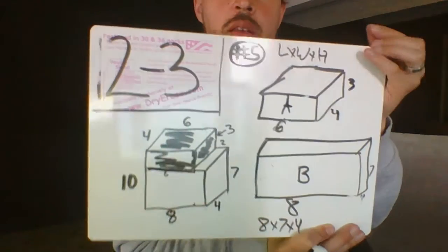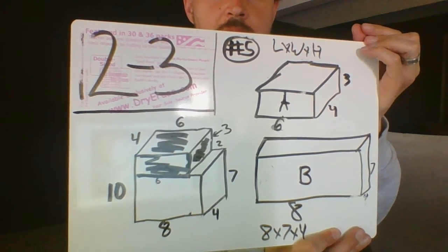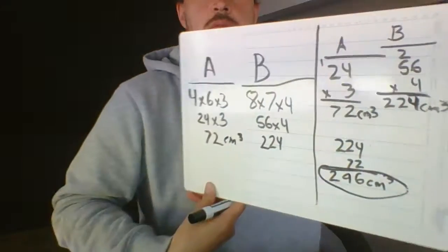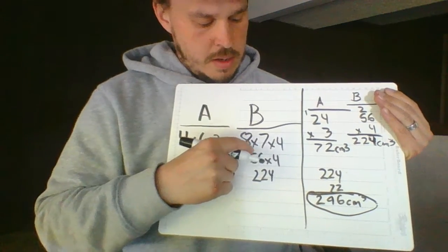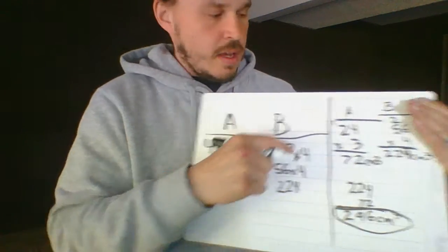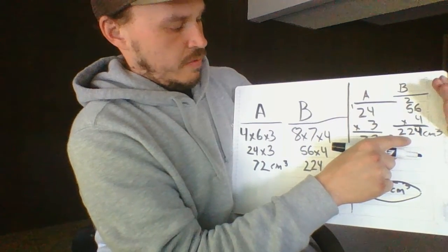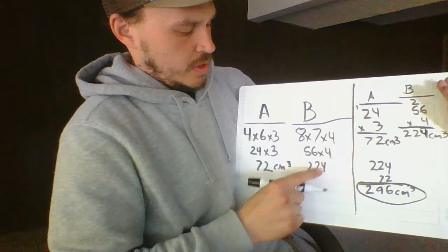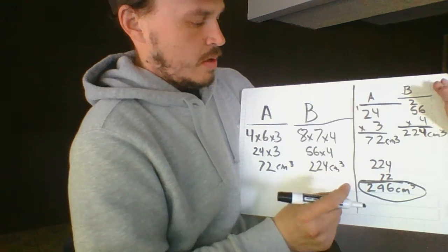And then B, which was my large Christmas present, it was eight times seven times four. So on the back I have eight times seven times four. And over here I did, I know eight times seven is 56. Then on the side I have to do the work. I did 56 times four is 224, which is 224 centimeters cubed, cubic centimeters.